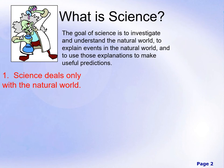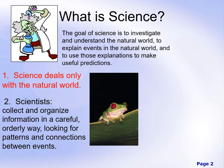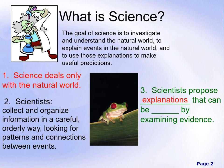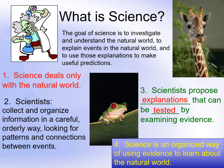Science itself deals only with the natural world. Scientists collect and organize information in a careful and orderly way, looking for patterns and connections between different events in nature. Scientists propose explanations that can be — and most importantly in science — tested by examining evidence. If your hypothesis cannot be tested, then it is not a good hypothesis for scientific study. Science is an organized way of using evidence to learn about the natural world around us.